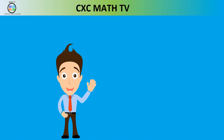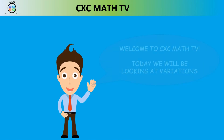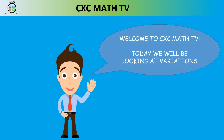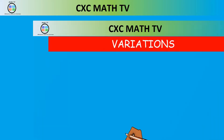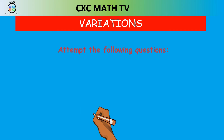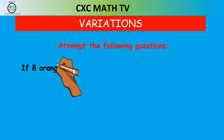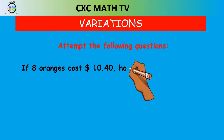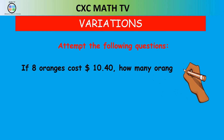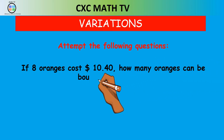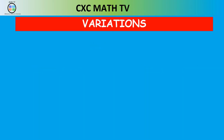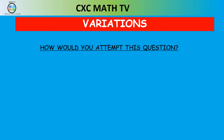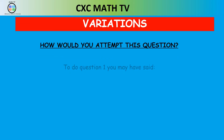Hello there, welcome to CXC Math TV. Today we will be looking at variations, a really nice topic. Before we start, attempt this question: if eight oranges cost $10.40, how many oranges can be bought for $33.80? Now, how would you attempt that question? Maybe what you did is you say eight oranges is $10.40.